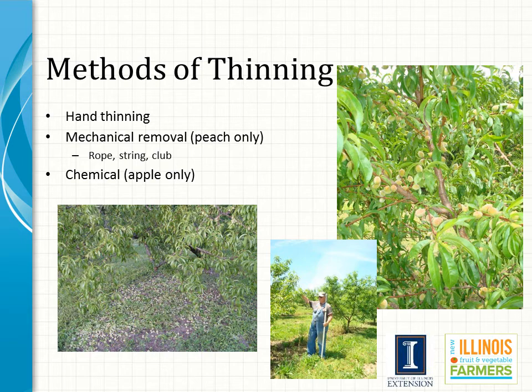Chemical thinning is almost exclusively used in apples. Commercial apple growers can spray their trees at the appropriate time with certain chemicals, which will cause some fruit to drop. It is a very precise operation, and either no thinning or over-thinning can result. Good results depend on selection of the correct chemical, rate, and time of application. Weather conditions before, during, and after application can influence results. When done properly, chemical thinning gives the best results of all methods since it is done earlier than the others, and is also the least expensive method.